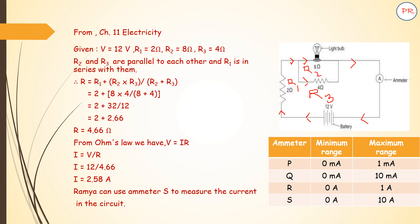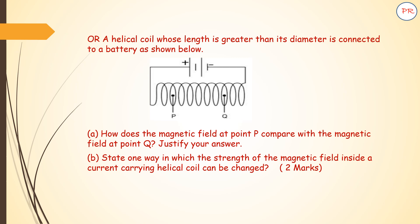So one has to write this answer carefully. Now looking at the next question: a helical coil whose length is greater than its diameter is connected to a battery. You can see a coil is given and it is connected to a battery, with two points P and Q shown. Part A: How does the magnetic field at point P compare with the magnetic field at point Q? Justify your answer. Part B: State one way in which the strength of the magnetic field inside a current-carrying helical coil can be changed.